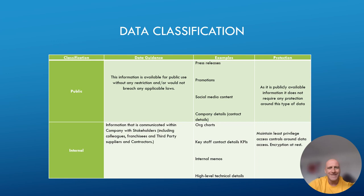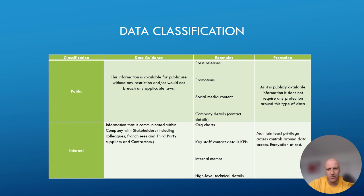The first label is public. Public data is information available for public use without any restriction that would not breach any applicable law. Examples include press releases, promotions, social media content, and company details such as contact address and telephone number. As it is publicly available information, public data does not require any specific protection requirements.